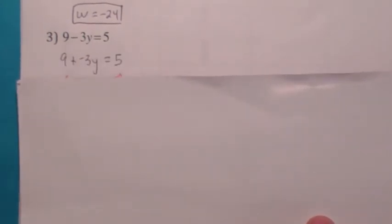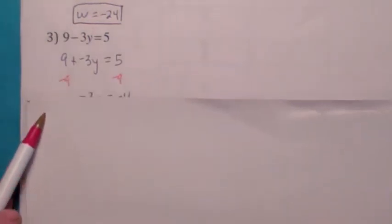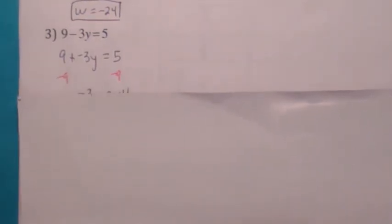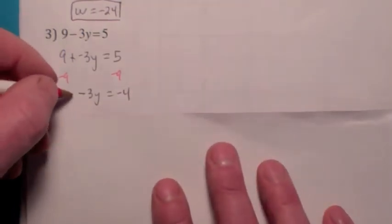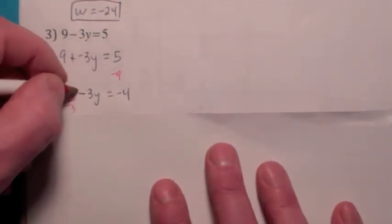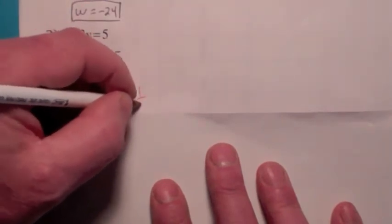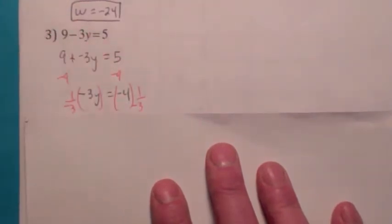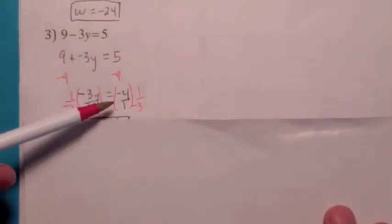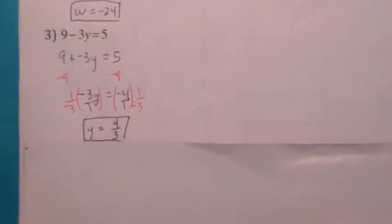What if you have both — a number that's multiplying your variable and added to your variable? You always want to get rid of what's being added first. So we're going to add negative 9 to both sides first, and then multiply by the reciprocal at the end. The coefficient is negative 3, so you multiply by 1 over negative 3. The negative 3's cancel, you just have y, and on the right side you have negative 4 over negative 3, which is 4 thirds.